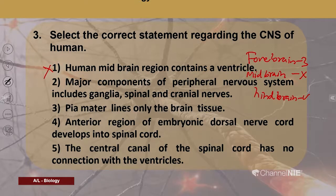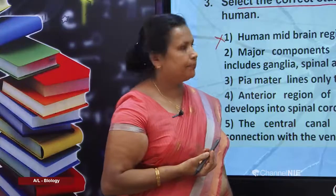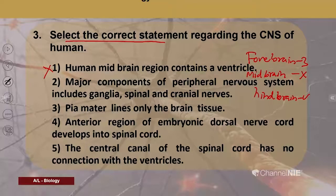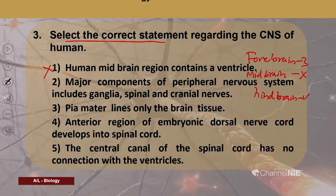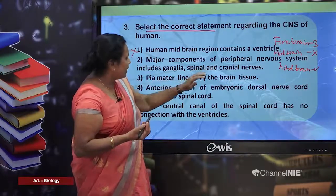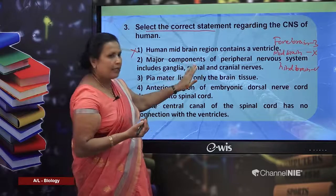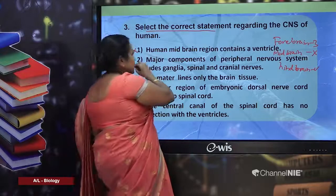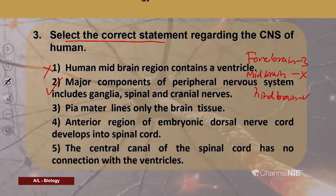Second option: major components of the peripheral nervous system include ganglia, spinal and cranial nerves. There are two components in the human nervous system: the central nervous system and the peripheral nervous system. The peripheral nervous system contains ganglia, spinal, and cranial nerves. Therefore, this answer is correct.